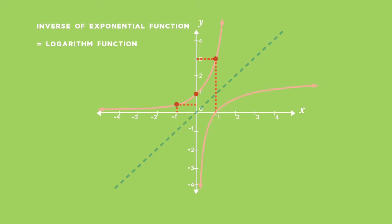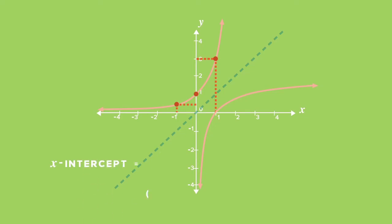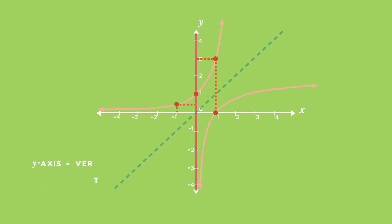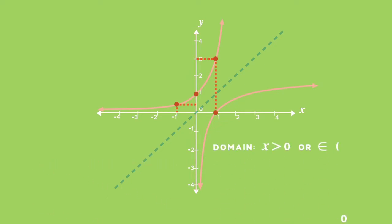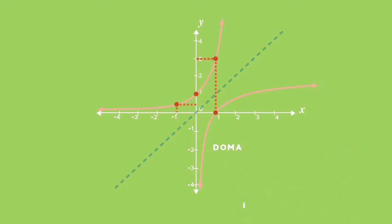Also notice the following properties about the log graph and how it relates to its inverse. The coordinates of the x-intercept of the log graph are (1, 0). The y-axis is a vertical asymptote of the log graph. The domain is made up of a set of x values greater than but not equal to 0. The range is a set of real numbers. These properties are all inverted properties of the exponential graph, with the x and y values swapped around.